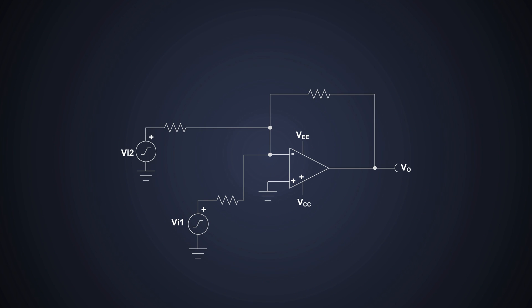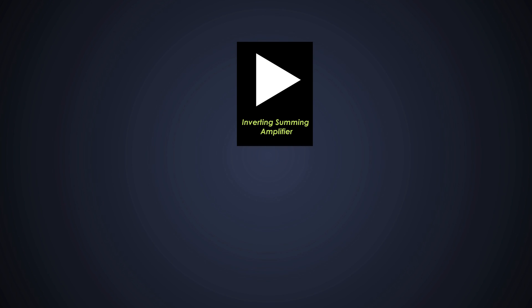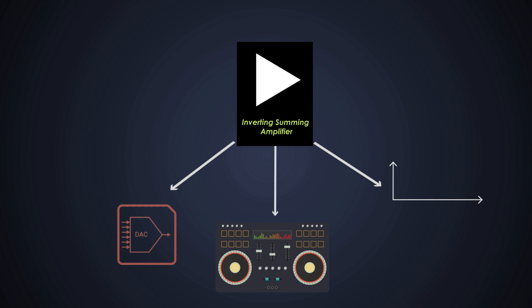Well, we can add multiple inputs to this circuit instead of just two, where we will need multiple input resistors, and there will be changes in the design calculations as well. We can use this inverting amplifier as digital-to-analog converters, audio mixing, or as a DC offset for negative signals. The foundation of the digital-to-analog converters is based on these summing amplifiers.